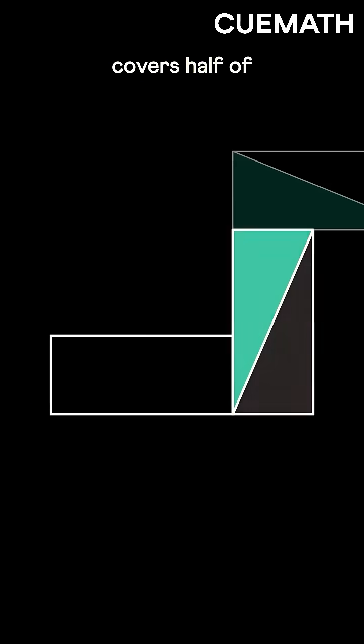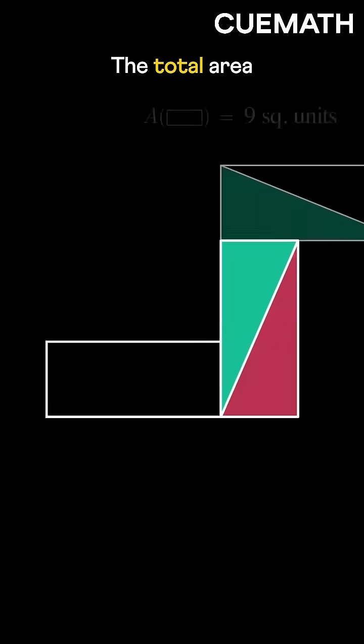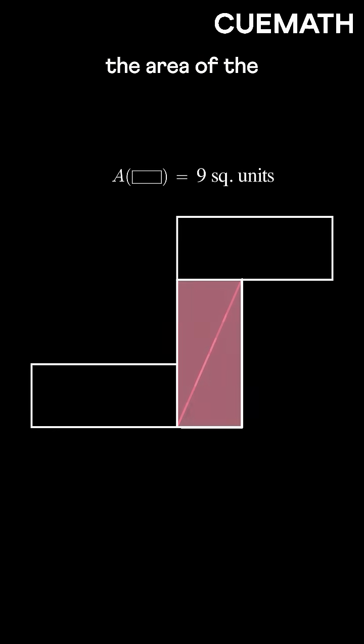Again, this triangle also covers half of this rectangle's area. The total area of these two triangles equals the area of the rectangle.